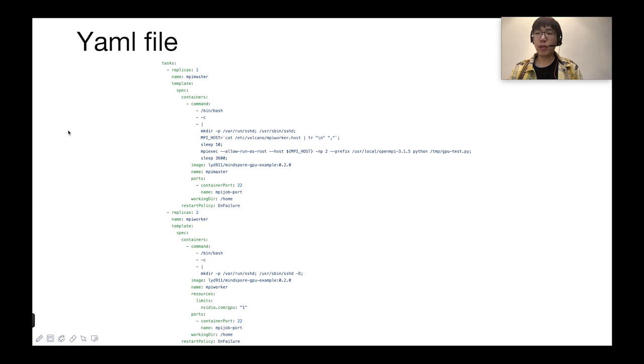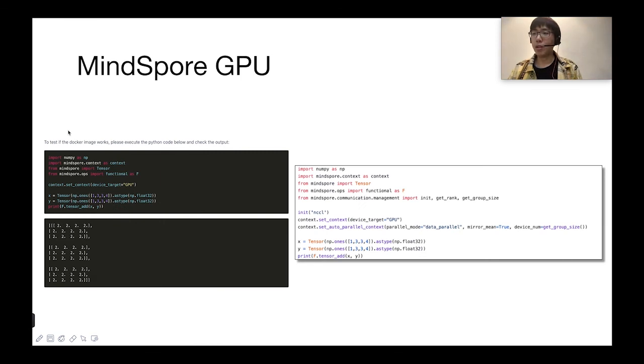This is a YAML file we use to launch the job. In this task, we launch two kinds of replicas: one MPI master and two MPI workers. The image we use in this example is a modified MindSpore version 0.2 GPU image, which I uploaded to my personal Docker Hub account. In MPI master, we run sshd and then execute the MPI command. The prefix tells the workers to find the paths of MPI in this image.